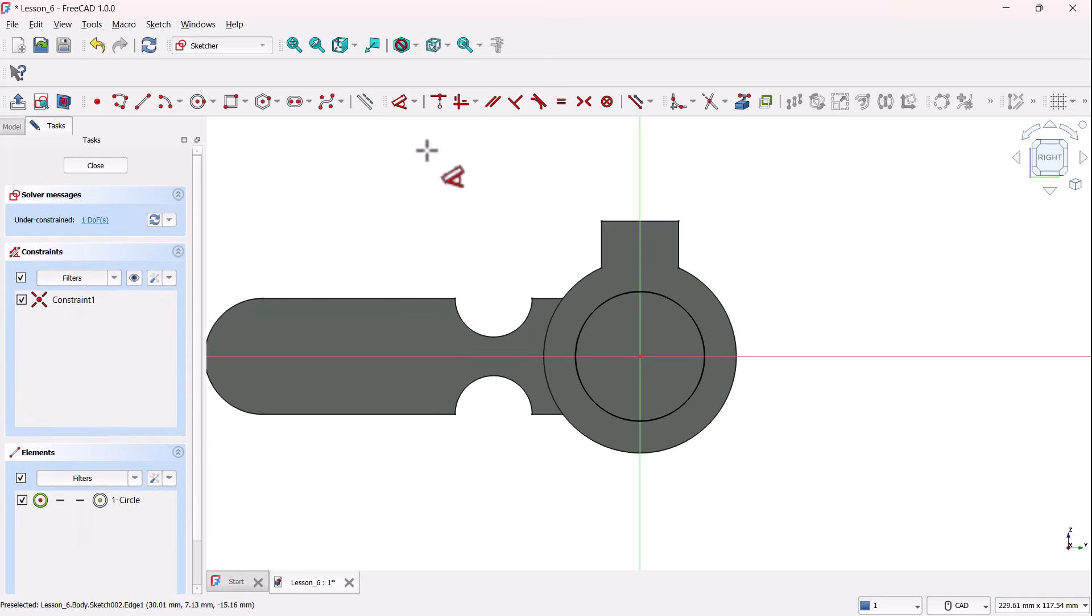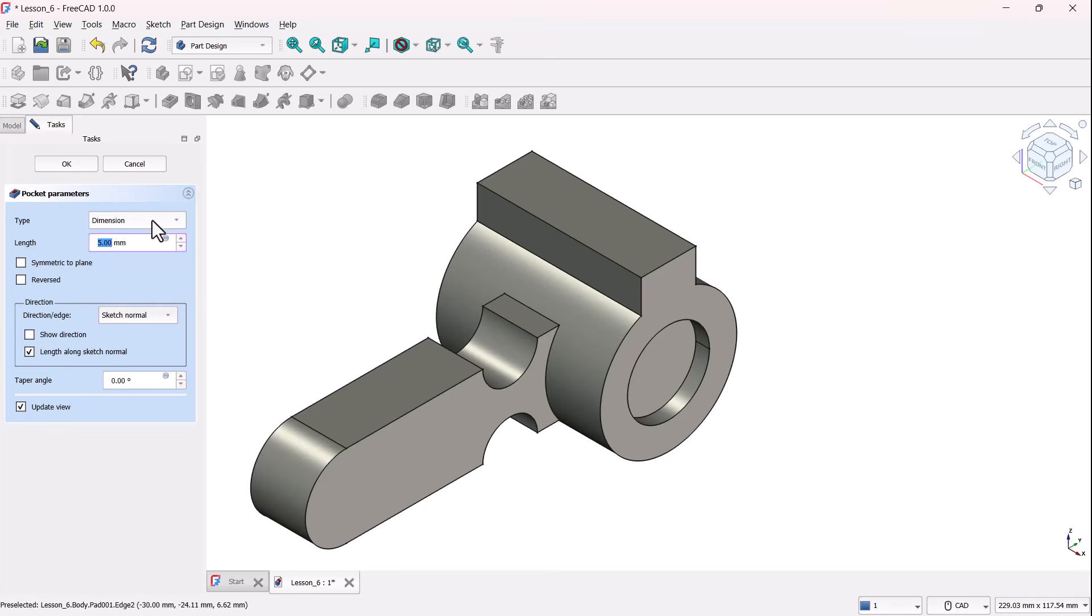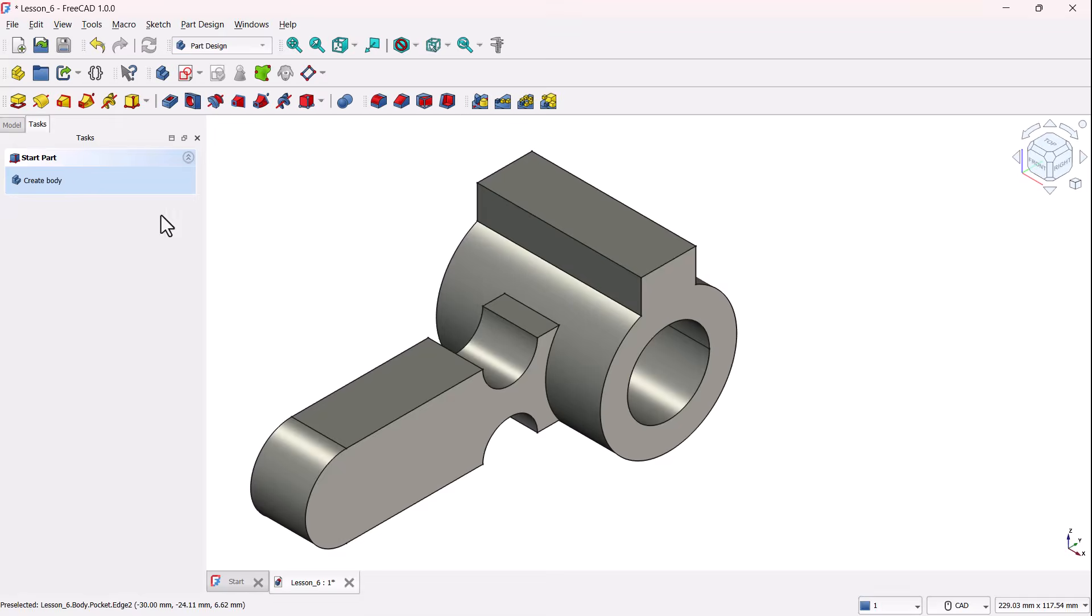Grab dimension tool and set diameter as 30 millimeters. Now, leave the sketch and select the pocket tool. Change the pocket parameter type as through all and click OK.